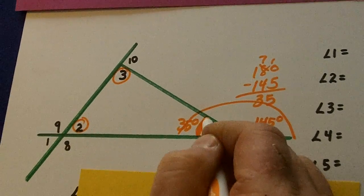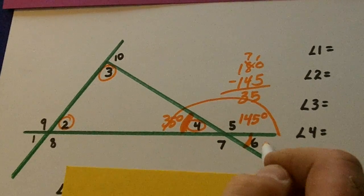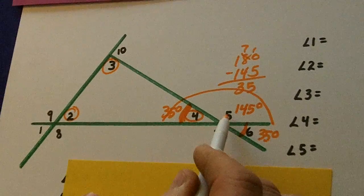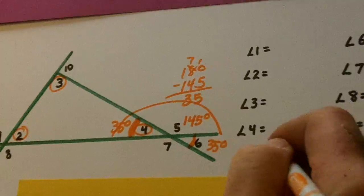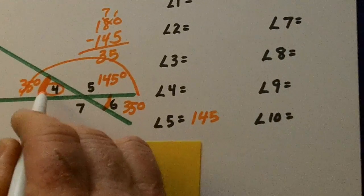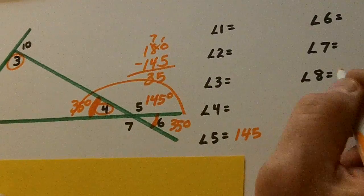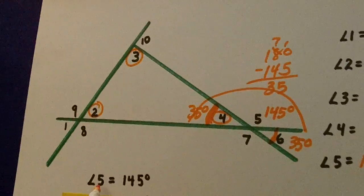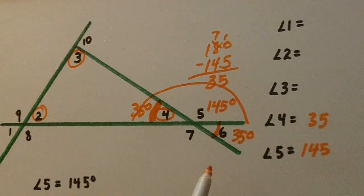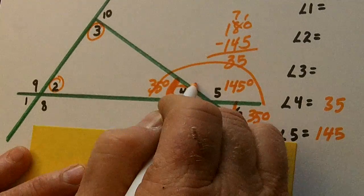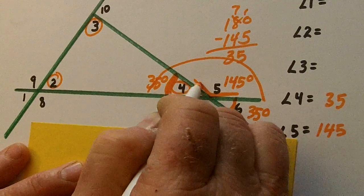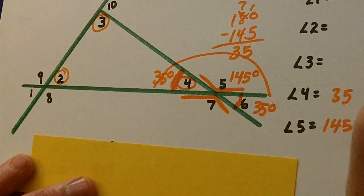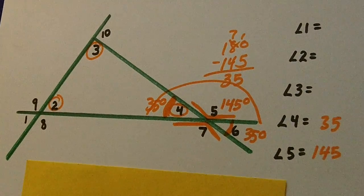Watch here. Vertical. Six is 35 degrees. So here, five is 145. Six and four are 35 each. And this says five is 145. Now watch this. This is vertical to this. So five and seven are equal. 145.